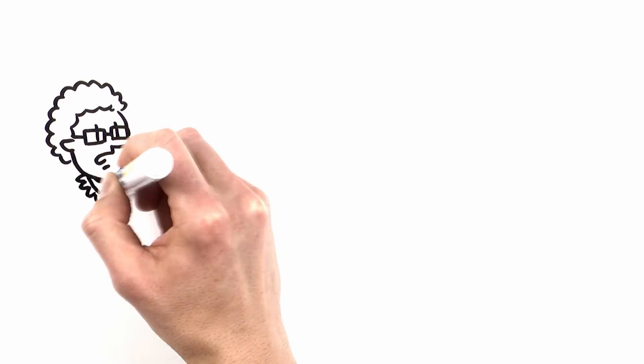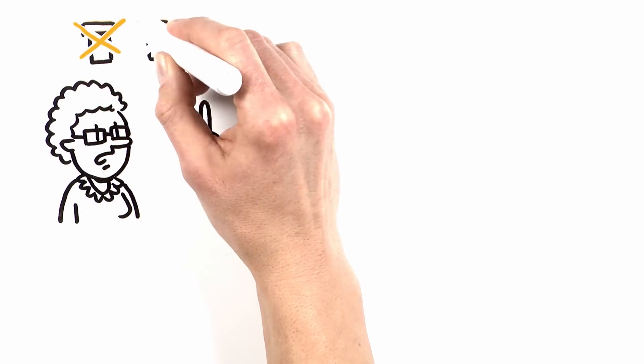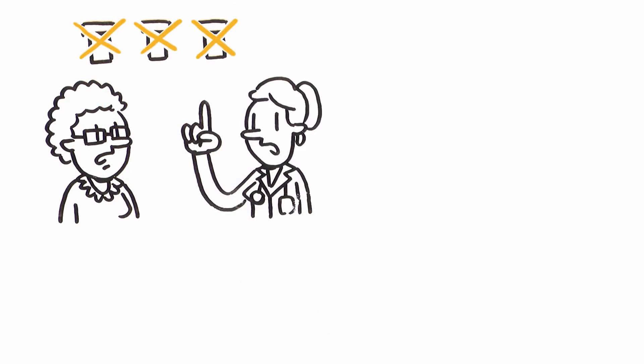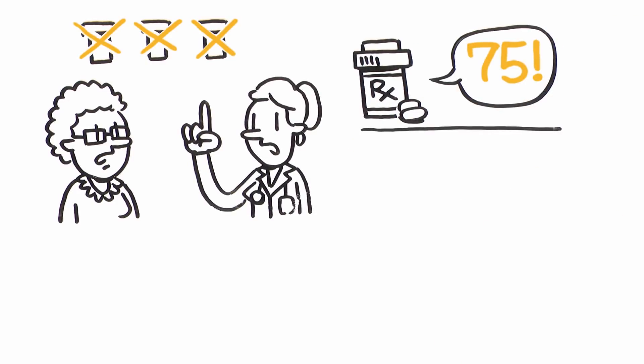As it turns out, Anita's regimen has numerous issues. Her doctor quickly notes which drugs are the biggest problem and why. One drug scores a whopping 75 on the risk scale.